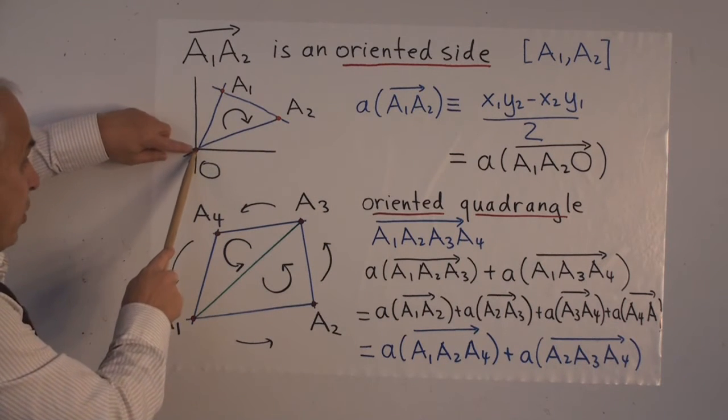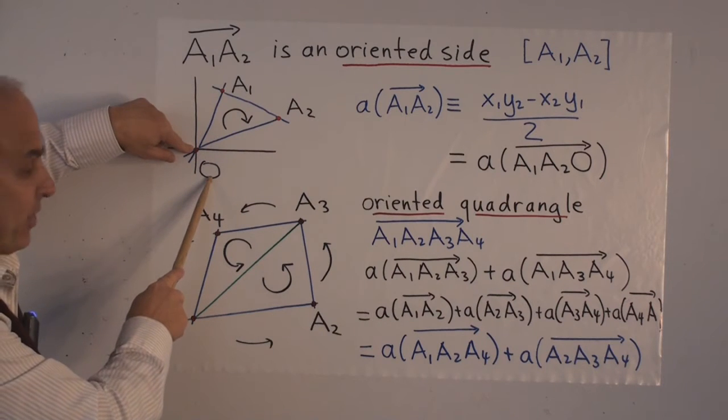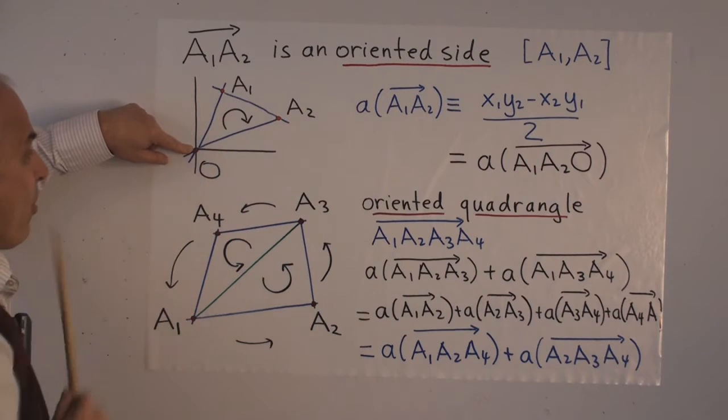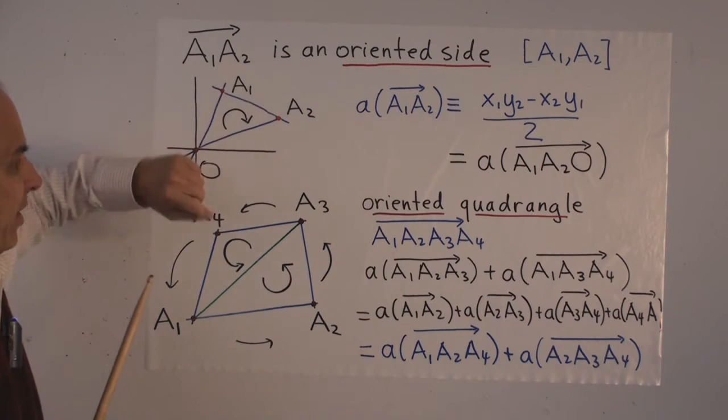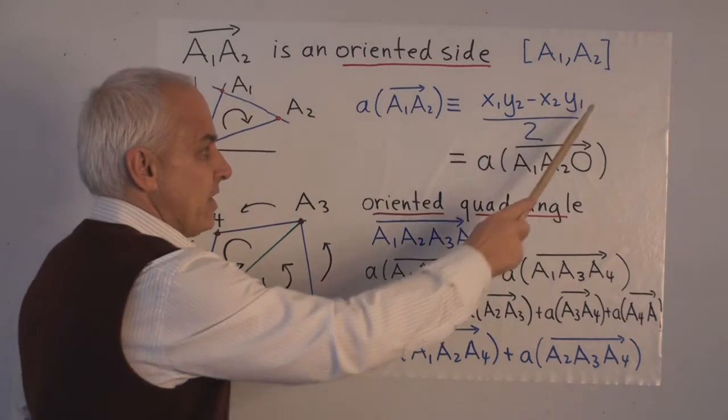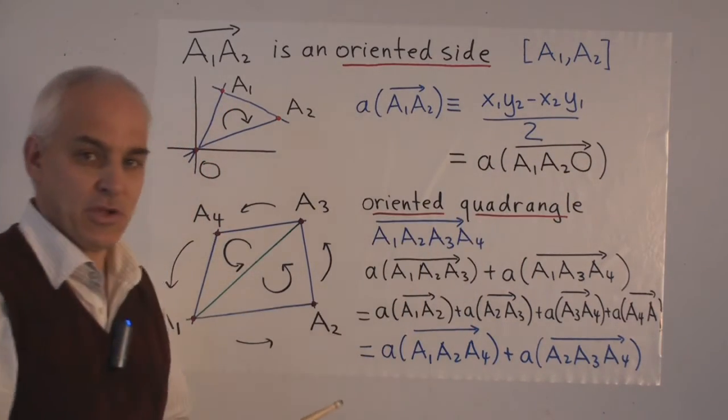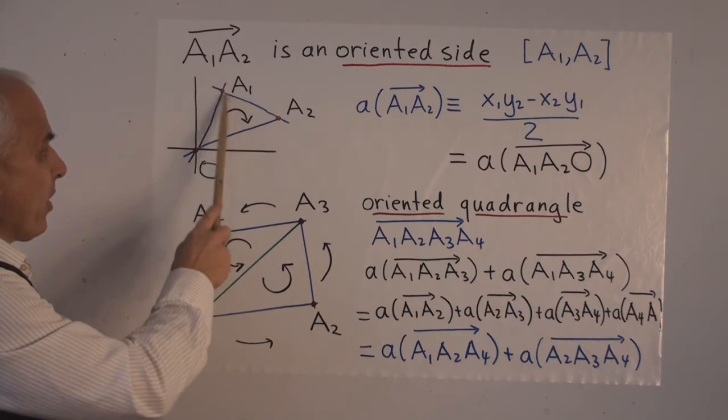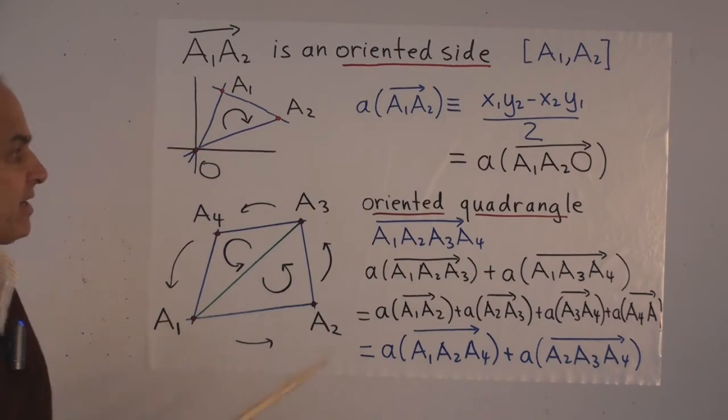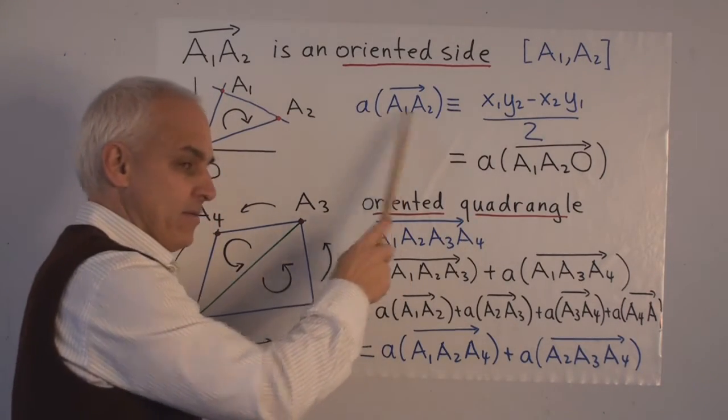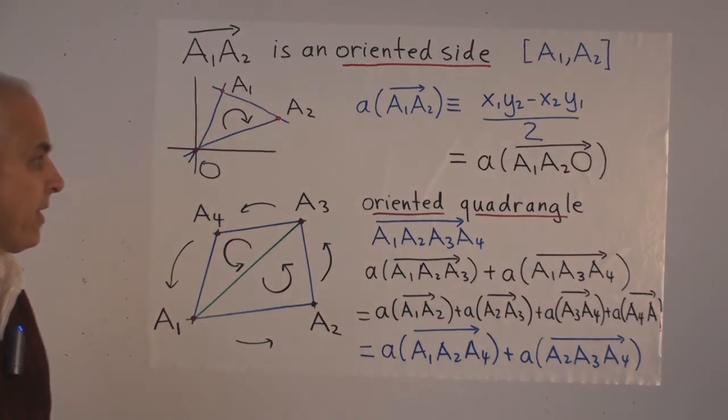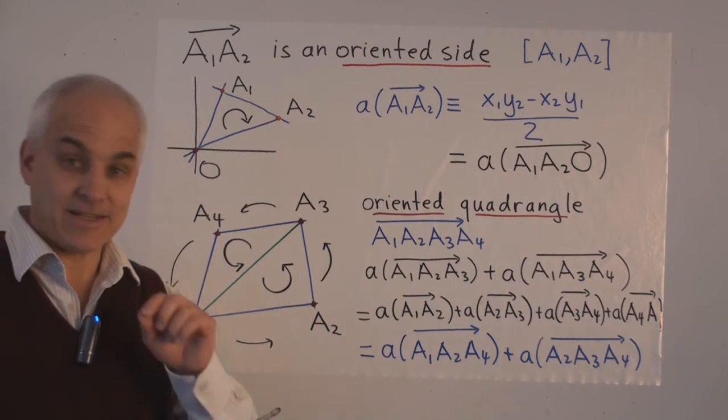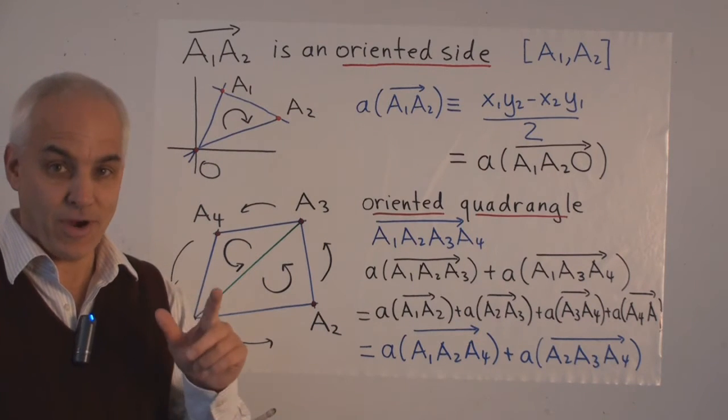And it also has the interpretation of a signed area of a triangle. Namely, if we take the origin O, the point with coordinates 0, 0, then the oriented triangle A1, A2, O has a signed area. And that's exactly given by this expression because the other four terms are all zero if we choose the origin as the third point. So we've defined a new notion of an oriented side and we've defined the signed area of an oriented side consisting of just two points. And using this notation, we can write the area of an oriented triangle as a sum of three signed areas of oriented sides.